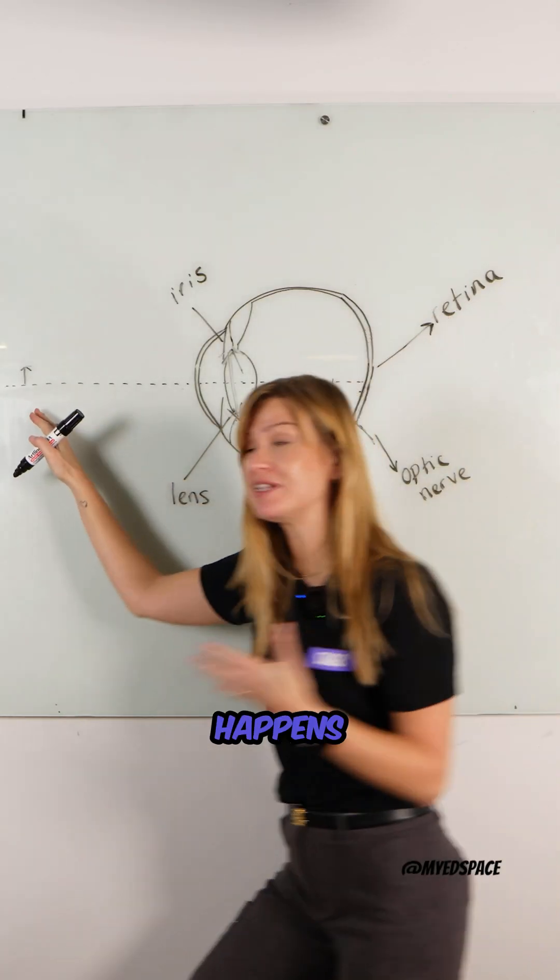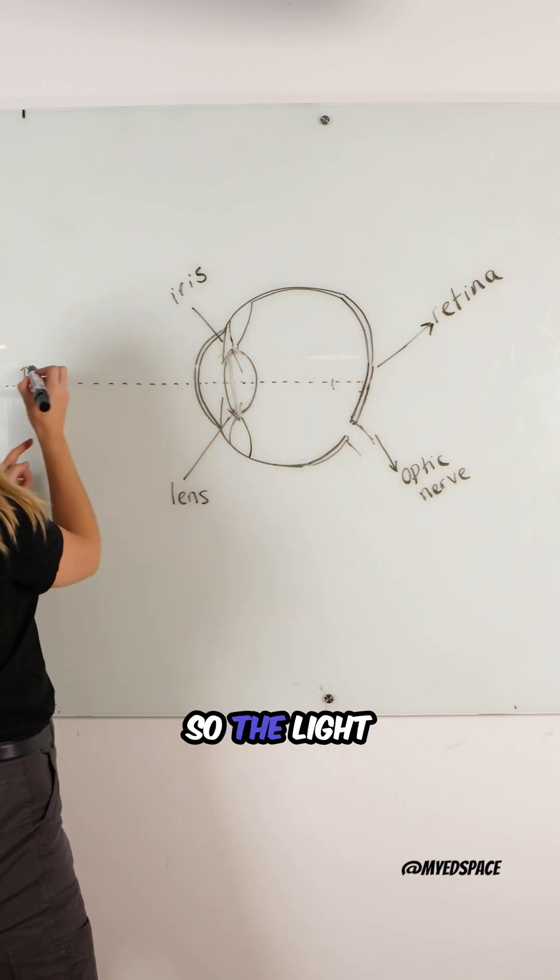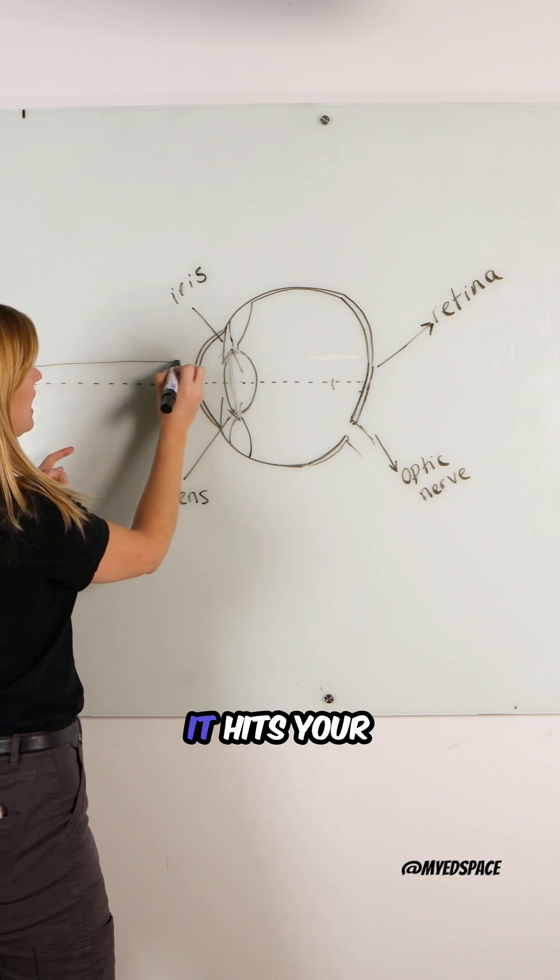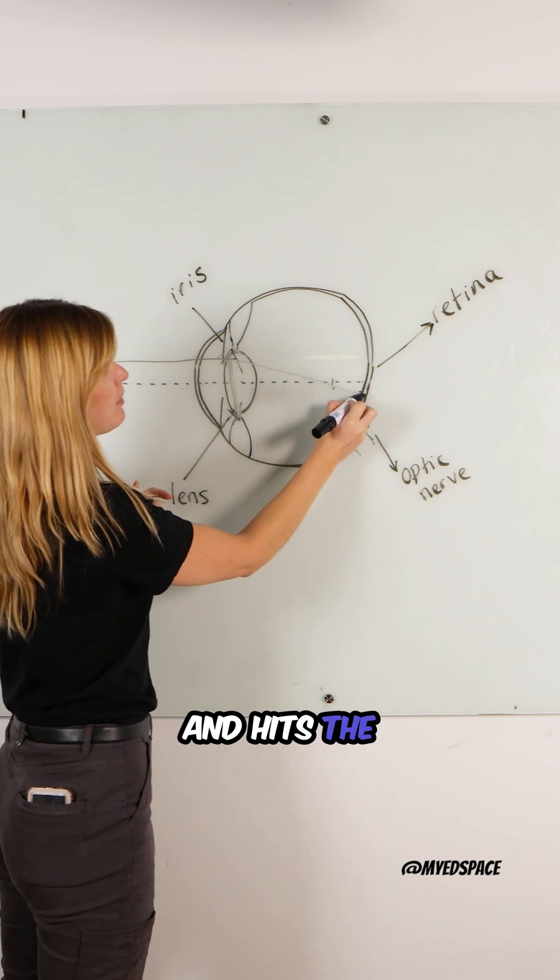So when we have a distant object, what happens is the light will leave the distant object and travel towards your eye. The light leaves the top of the object, hits your lens, and then it refracts through the focal point and hits the back of your eye.